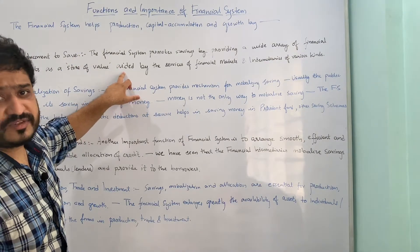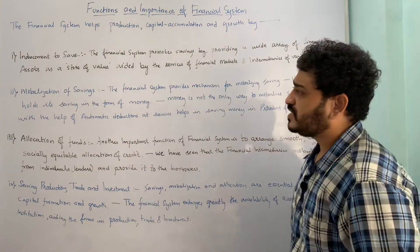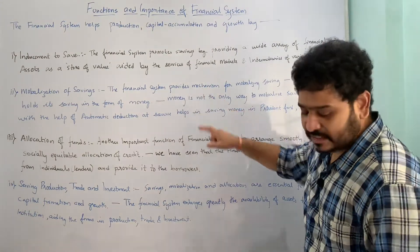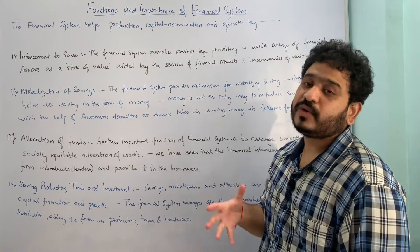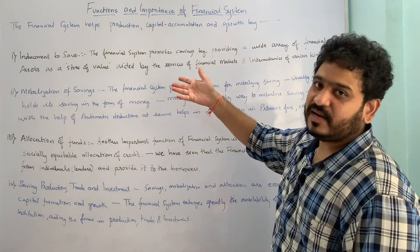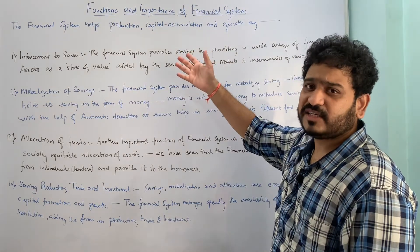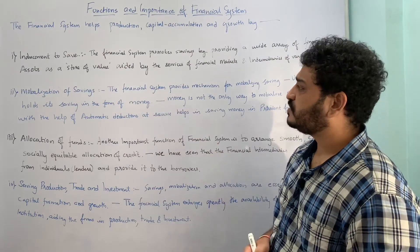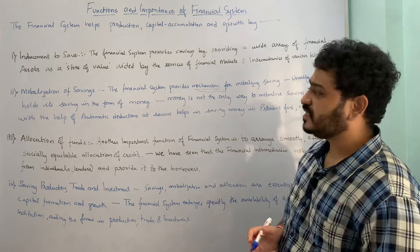Let us now move to the second function, which is called mobilization of savings. The financial system provides a mechanism for this. In the first function, we saw how you can save with the help of different assets available in financial markets and the underlying financial institutions. With respect to mobilization of savings, the financial system is providing the mechanism for mobilizing those savings.